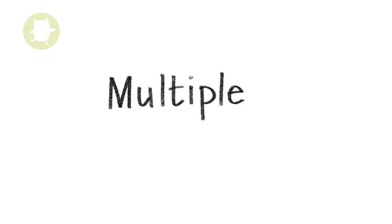The multiples of a number are the results of multiplying that number by other numbers, or in other words, all the numbers that it will divide into without leaving a remainder. Multiples are the basis of the multiplication tables. They go on and on forever.